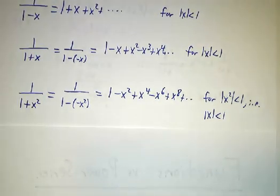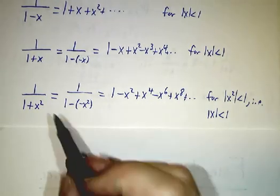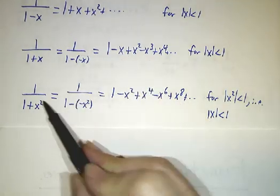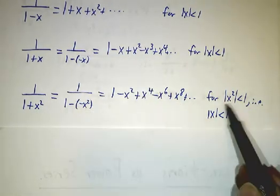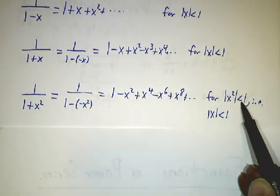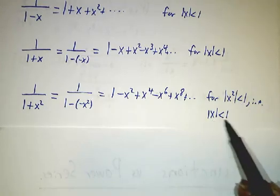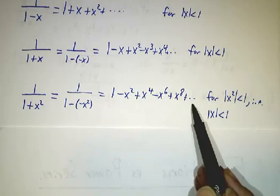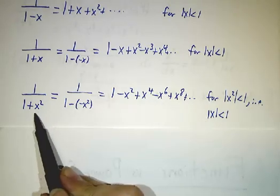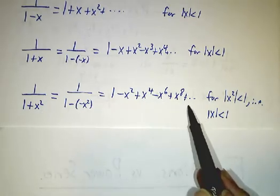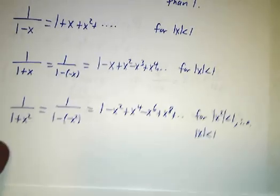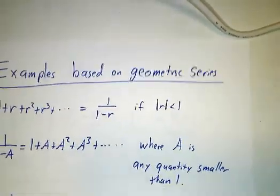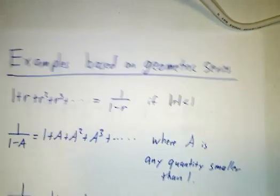We could do it for x squared instead of for x. It's the same formula, the same geometric series. As long as x squared is less than 1, which is to say as long as x is less than 1, then the series is going to converge. So we've got a series for 1 over 1 plus x squared. Now we're starting to rack up a decent number of functions that we can apply power series to.